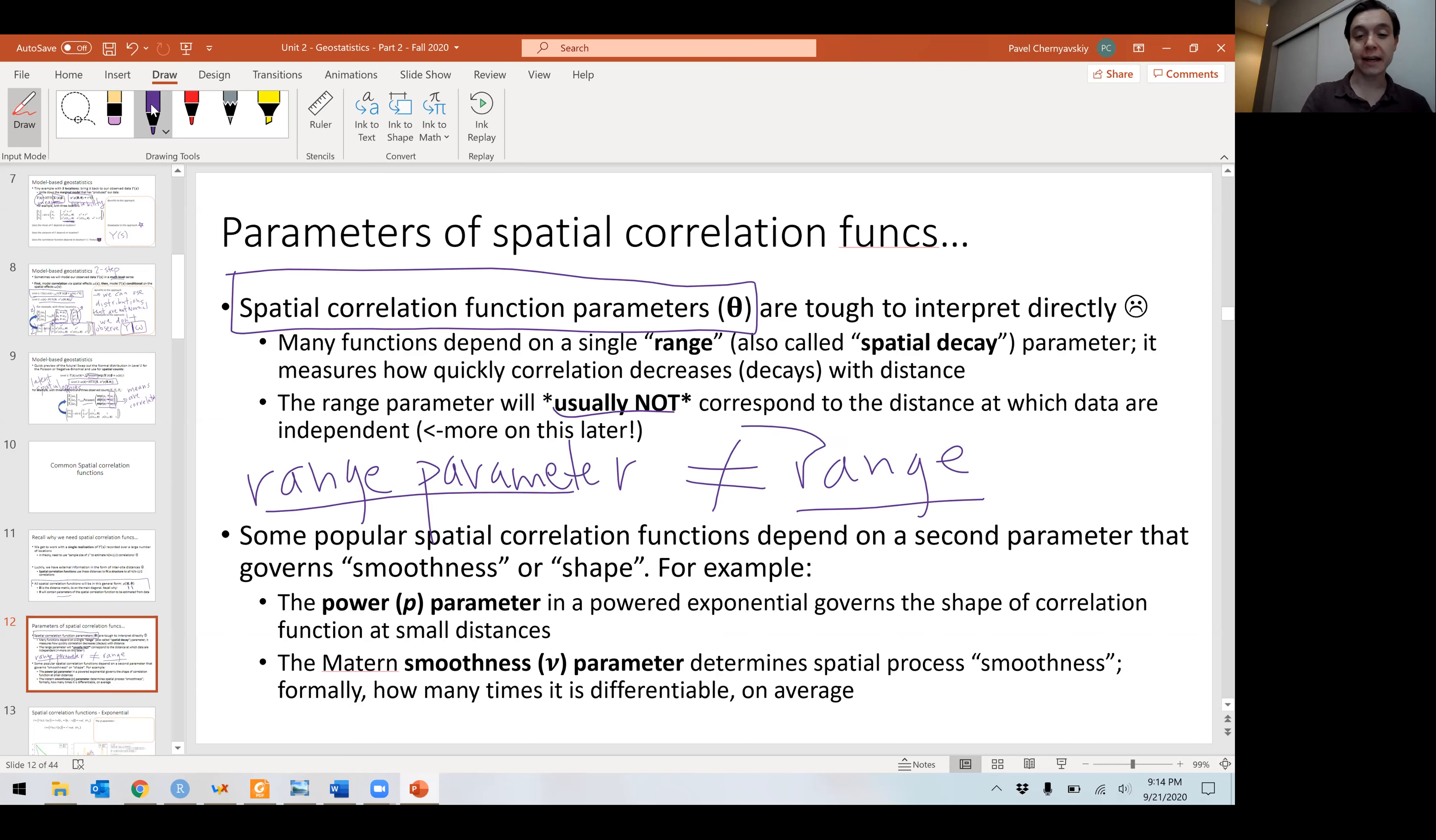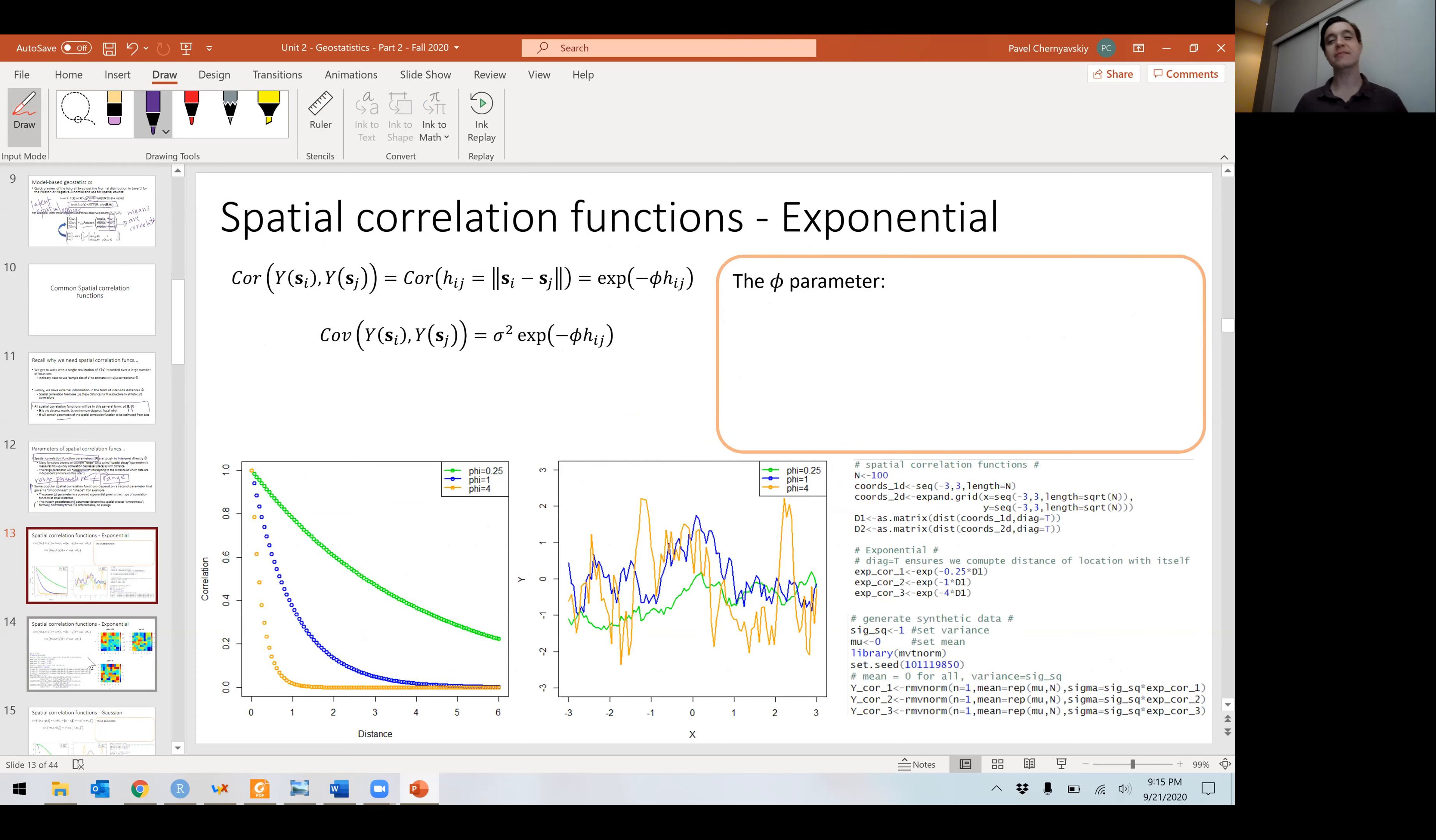Sometimes you will see this referred to as a range parameter, but do not confuse that with the range. Range parameter is not the range. The range parameter is a parameter inside the correlation function. The range is the distance where spatial correlation goes to zero. One will be a function of the other, but they're not the same, so don't confuse them. The other difficulty is that some of the most popular or most common spatial correlation functions will depend on a second parameter. And so for us to think about the range, we will need to really compute it at any one of the covariance terms is not readily interpretable.